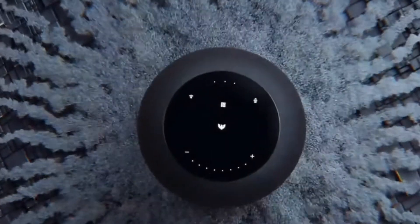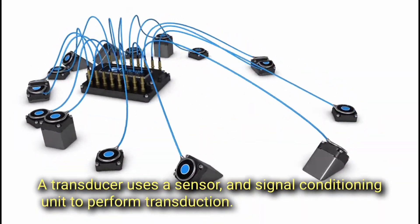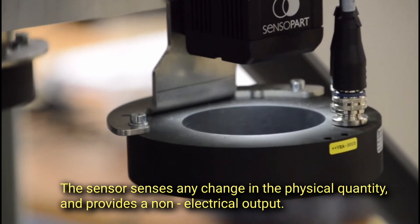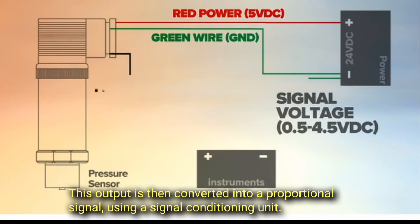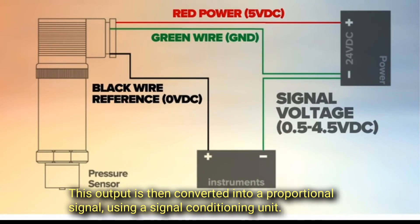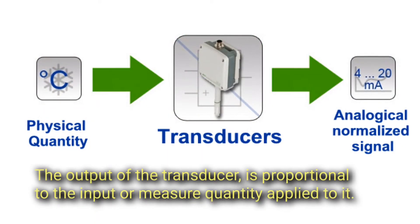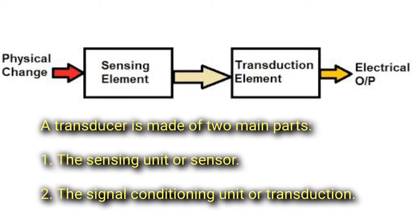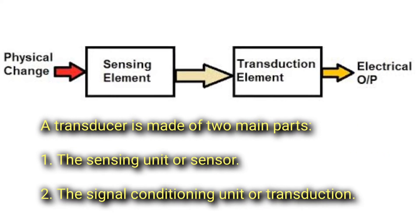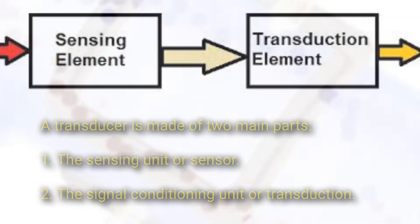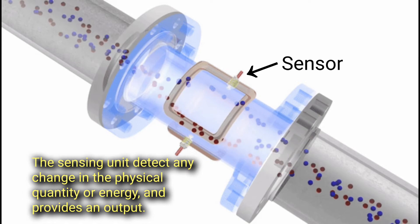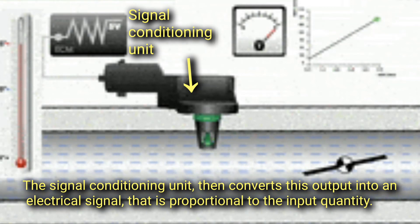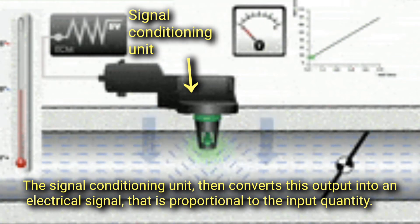A transducer uses a sensor and a signal conditioning unit to perform transduction. The sensor senses any change in the physical quantity and provides a non-electrical output. This output is then converted into a proportional electrical signal using the signal conditioning unit. The output of the transducer is proportional to the input or measured quantity applied to it.